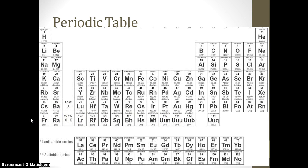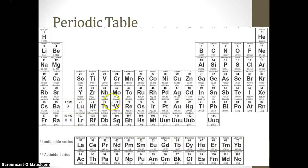Here's a question: how many subshells are located on the sixth energy level, and what are their names? Pause the video and answer. On the sixth energy level we have the 6s subshell, the 4f subshell, the 5d subshell, and the 6p subshell — all located within the sixth energy level.